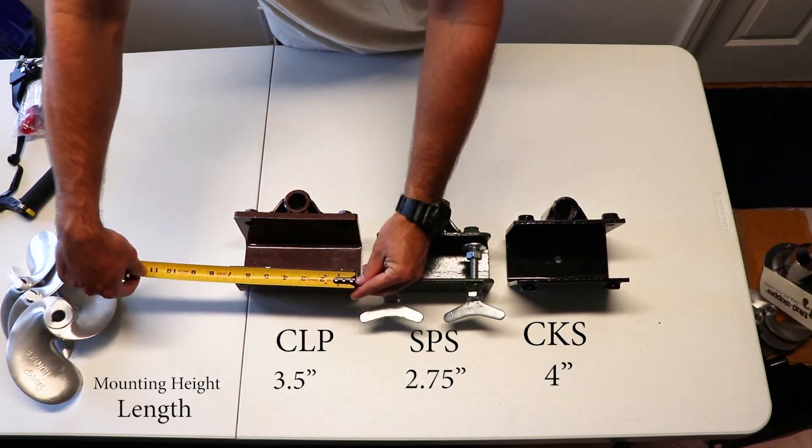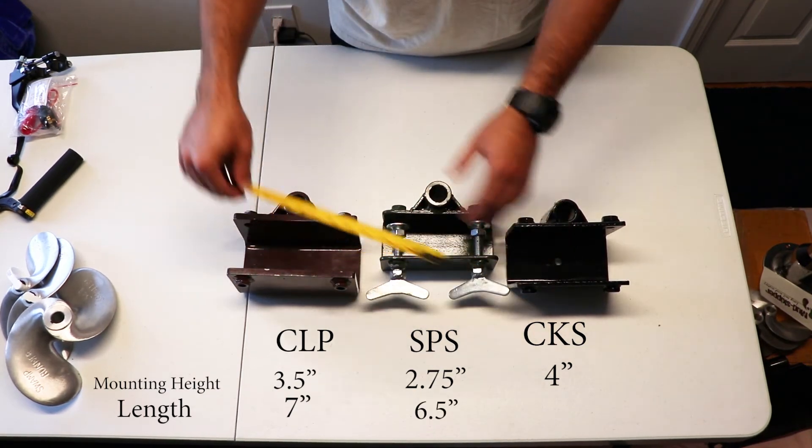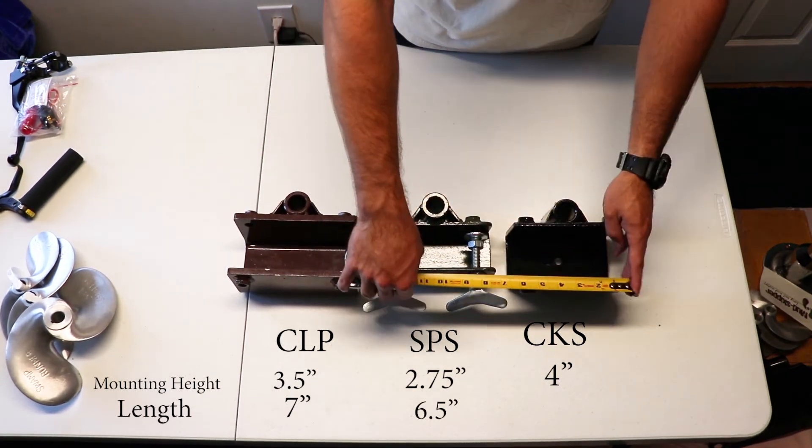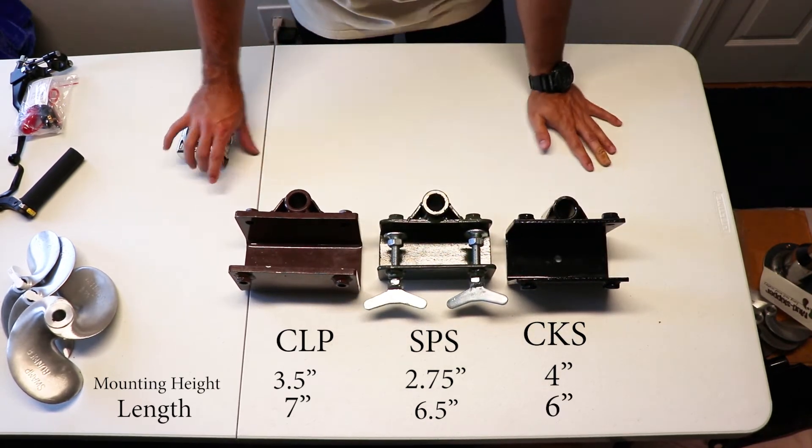So length is seven inches for CLP, six and a half inches on SPS, and six inches for CKS.